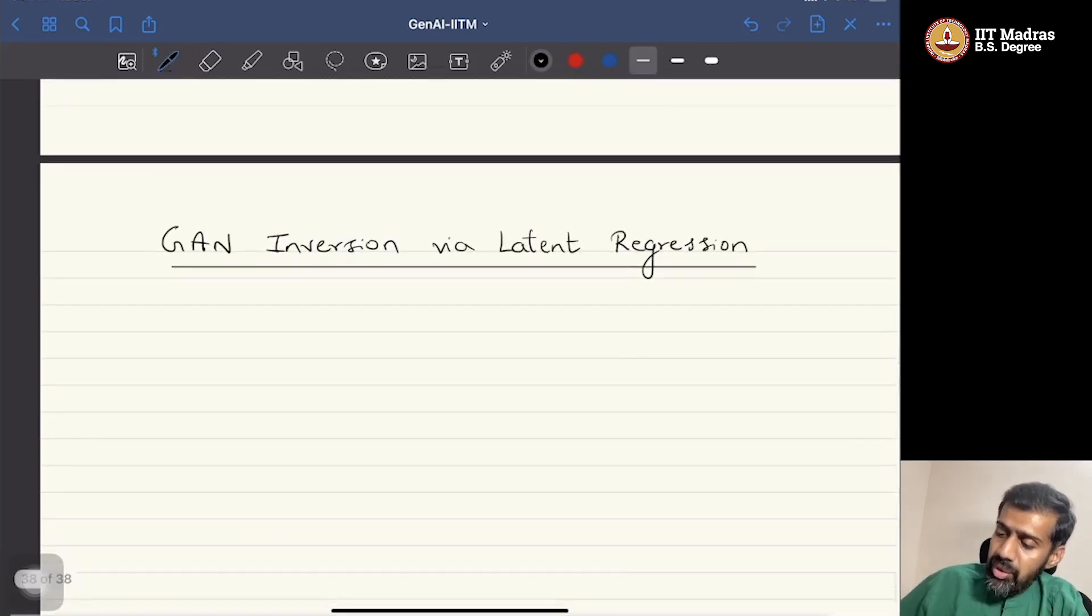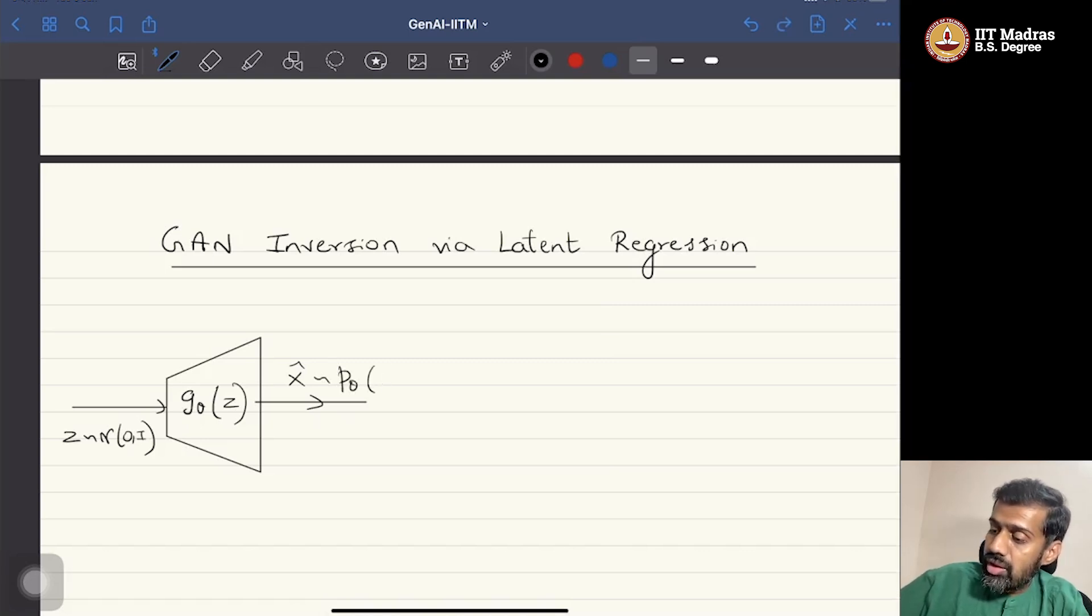So how do we do this? It is very similar to ByGAN, but instead of explicitly solving the problem of inversion via minimization of matching the joint distributions, what the latent regressor GAN inversion would do is that it still has an encoder network, because without that nothing can be done. So we do have an encoder network here that would take X.